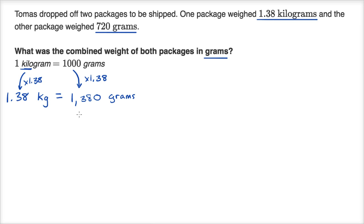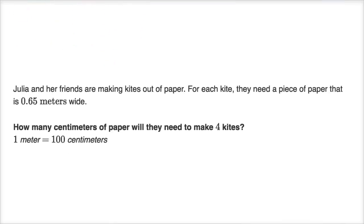Now let's add those together. This is the first package, and the second package is 720 grams. If I were to add, this is going to be, zero, 10, four plus seven is 11, and then one plus one is two, we get 2,100 grams in total. Let's do another one of these unit conversion examples.